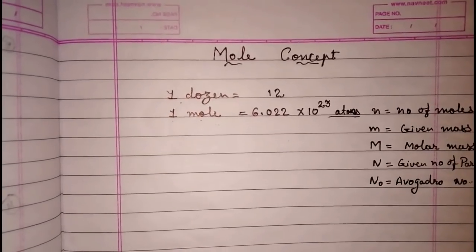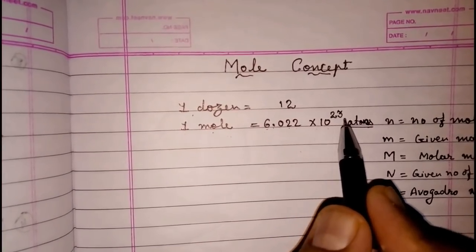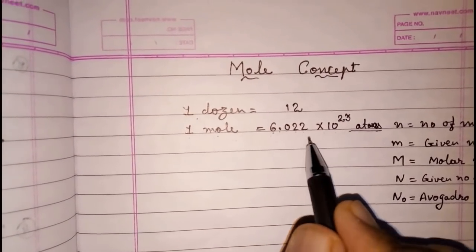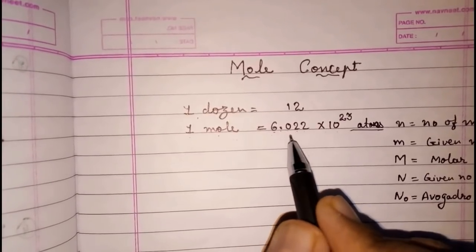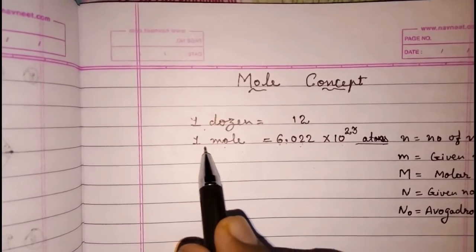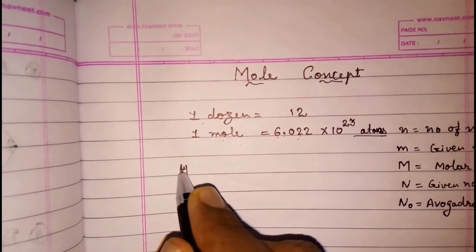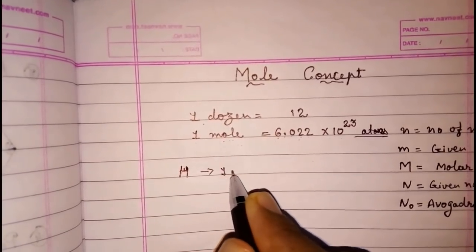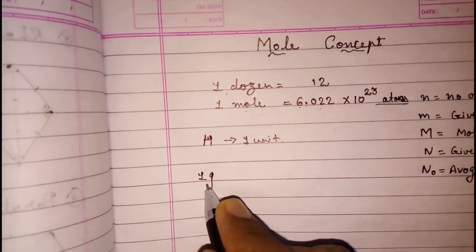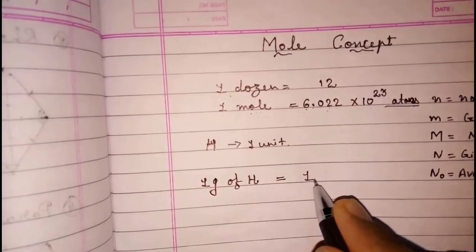Now I am telling you why and how they did this. The number 6.022 into 10 raised to 23 atoms combines to form one mole — but why this number only, and not something else? Because the mass of this number of atoms is equal to the atomic mass in grams. For example, hydrogen has a mass of 1 unit, so 1 gram of hydrogen is equal to one mole of hydrogen.